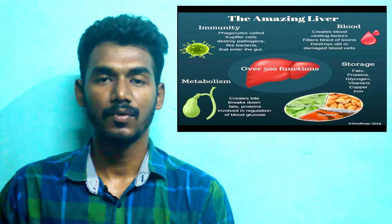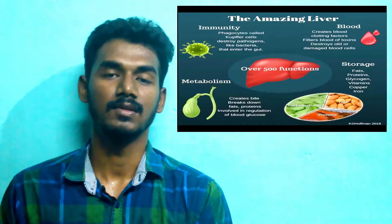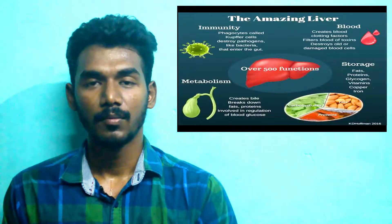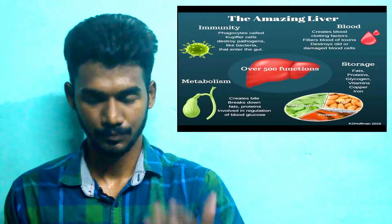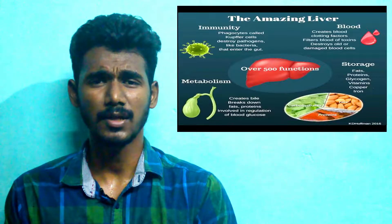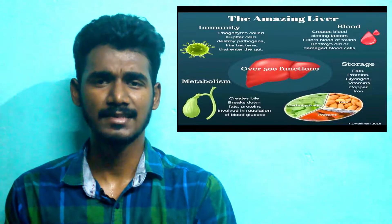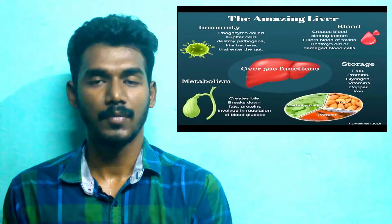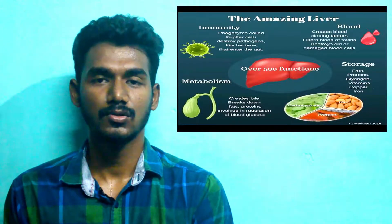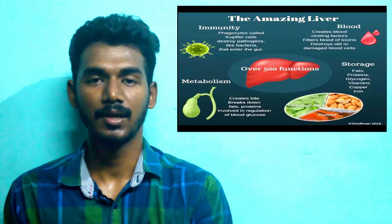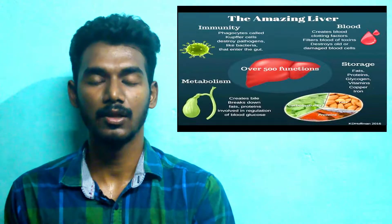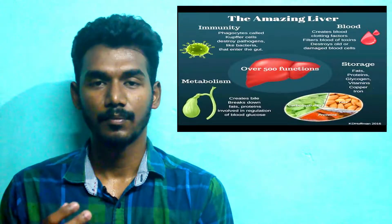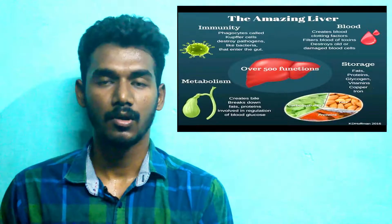The liver contains Kupffer cells. It is involved in excretion — bile juice and bile pigment. The bile pigment is called bilirubin. Bilirubin is removed, along with bad cholesterol.